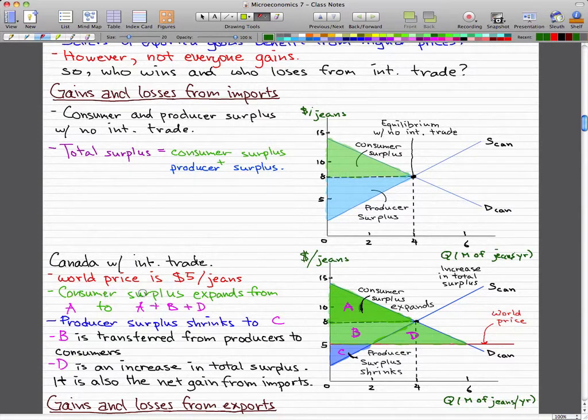Which is the area of the consumer surplus that we had before. This was the before and this is the after. Consumer surplus expands from A to A plus B plus D as I've listed here.